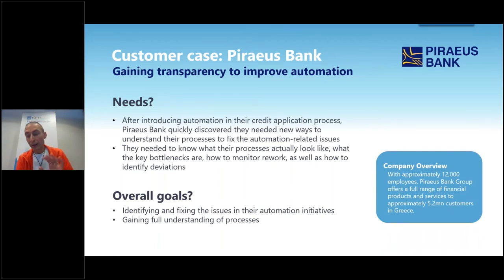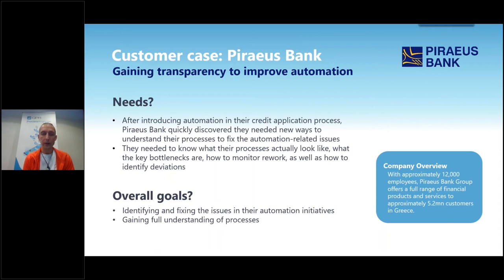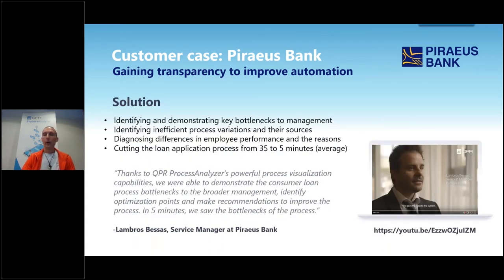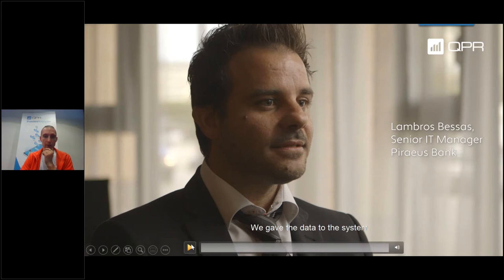Moving on. Whereas Metsaboard was a nine-year journey, this next case is from the other extreme: how do you get benefits really fast? Piraeus Bank has 12,000 employees and had been implementing robotic process automation for the credit application process. There were challenges — it was not working the way it should. What they wanted to achieve was cutting the loan application process from 35 minutes to 5 minutes on average.